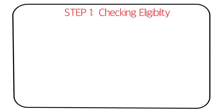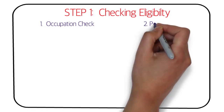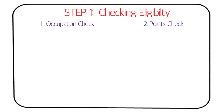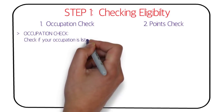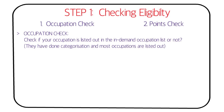Step one is the eligibility check — the first and foremost thing you should do, and you can do it online. There are two parts: first, an occupation check to see if your occupation is listed in the in-demand occupation list. Most occupations are listed, so you don't need to worry.